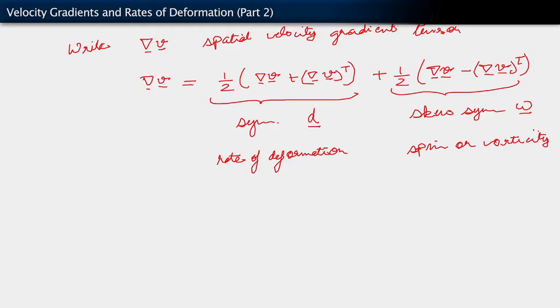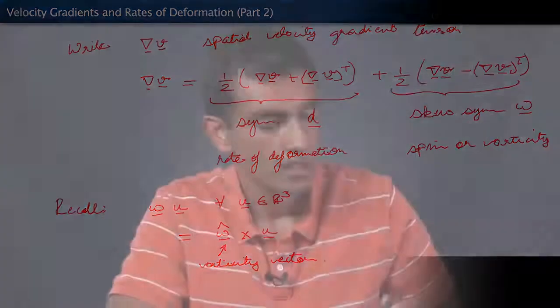As a final thing, I will recall that since ω is a skew symmetric tensor, it also admits this axial vector representation. So recall that ω acting on a vector u for all u belonging to R³. Can also be written as an axial vector which, following the convention we introduced quite a few segments ago, we will write as ω̂ crossed with u. And in this case, this is simply the vorticity vector.